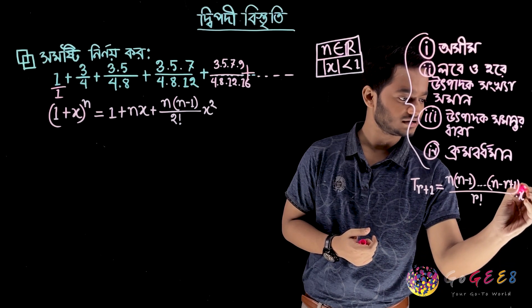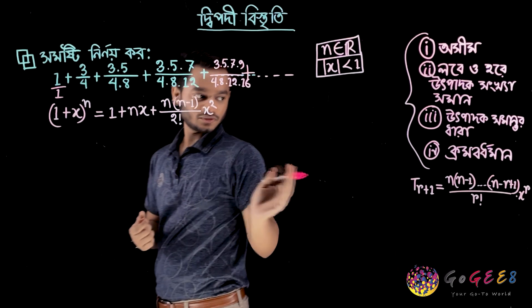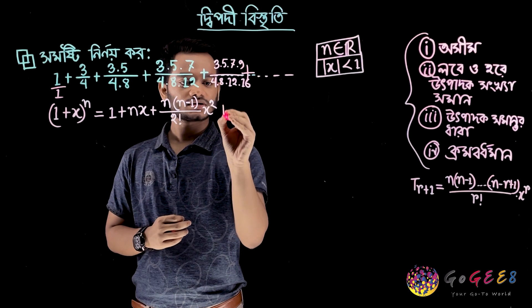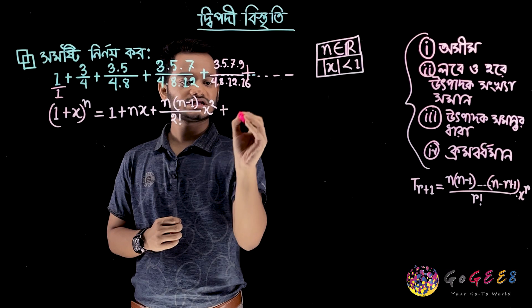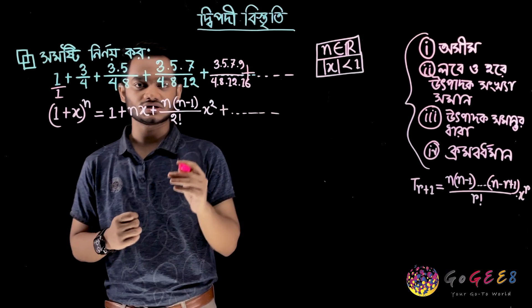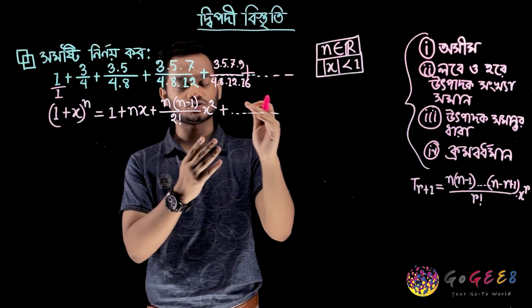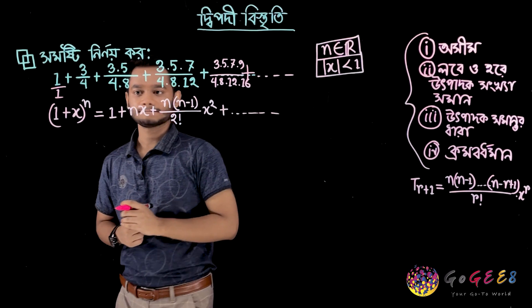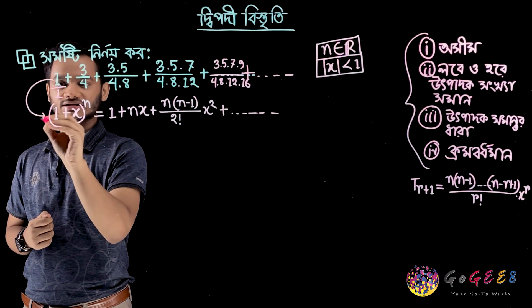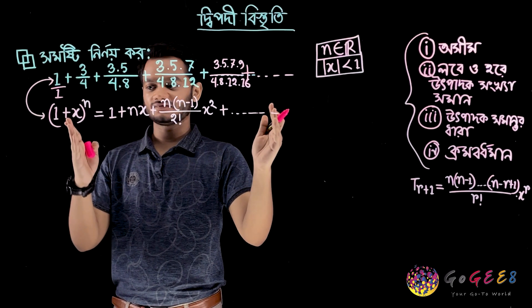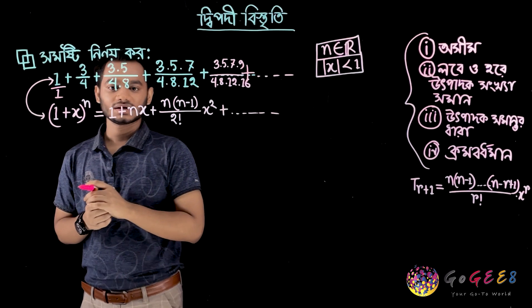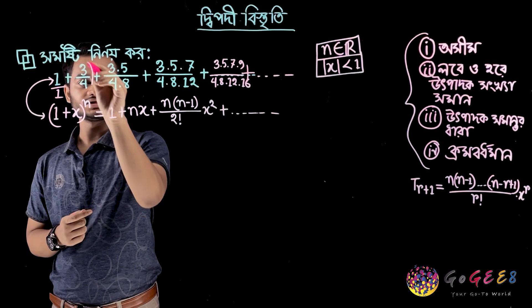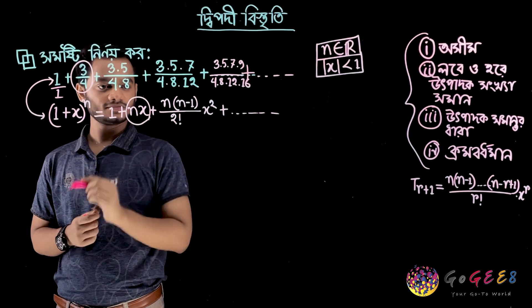n into n minus 1 into n minus 2 divided by r factorial, x to the power r, to the power of n into x to the power number, and n minus 5 minus 1 to the power of n minus 1 plus 1 minus 1 minus 1 to the power of n minus 1.